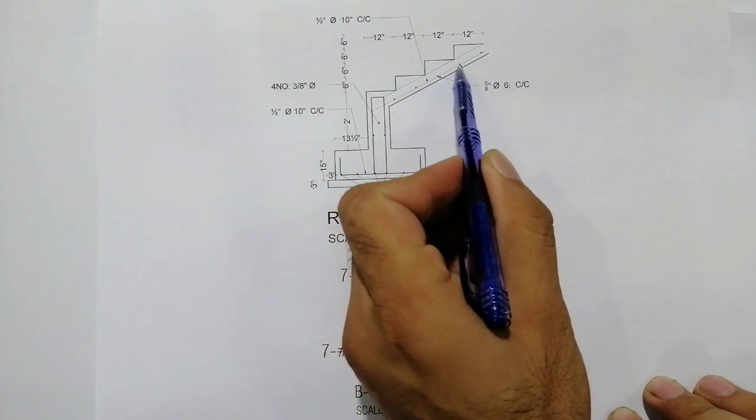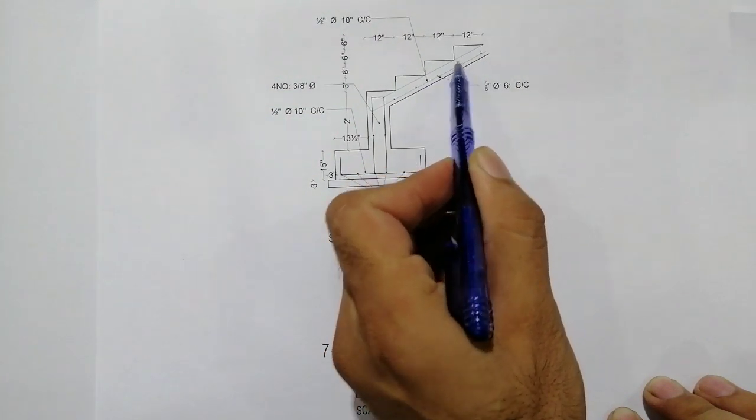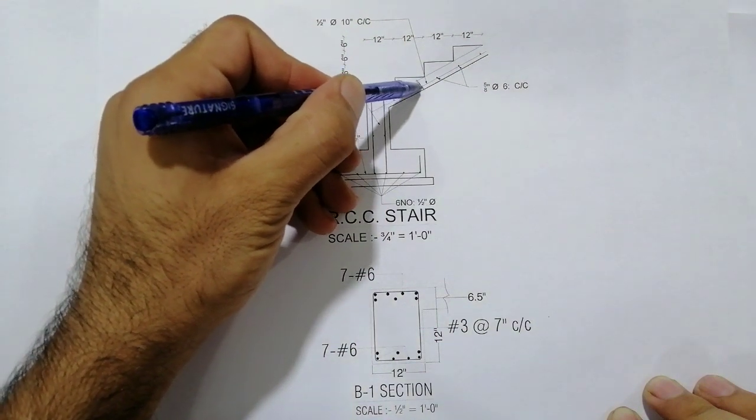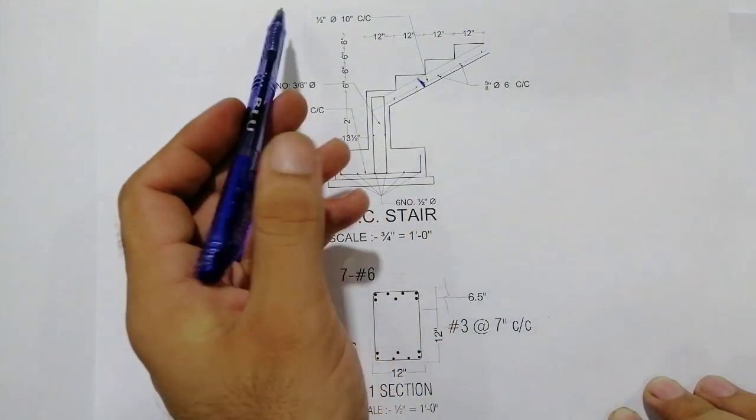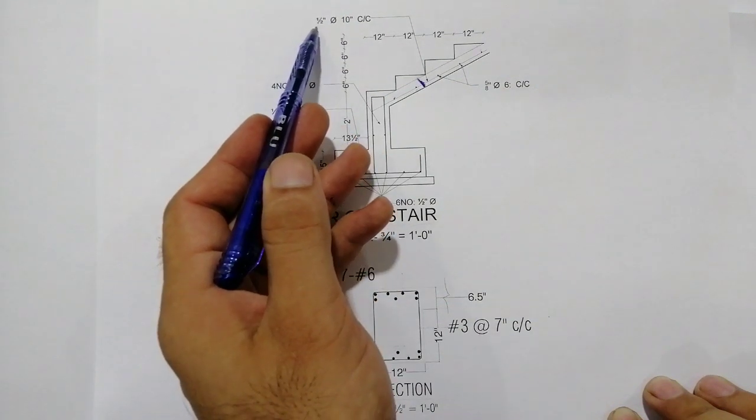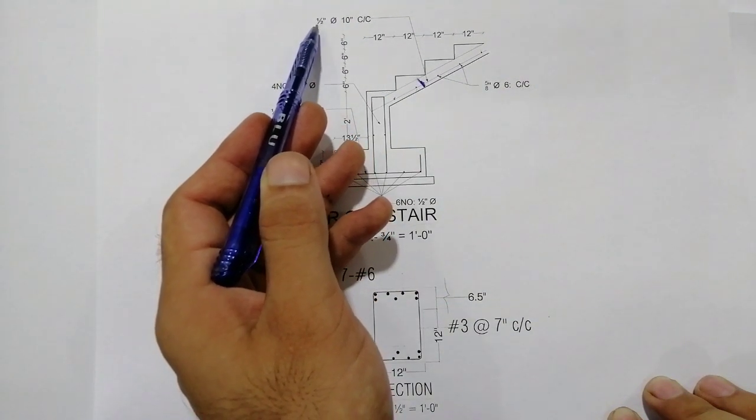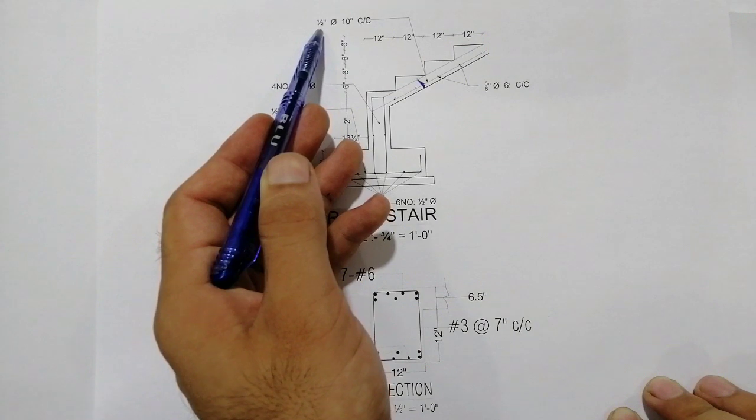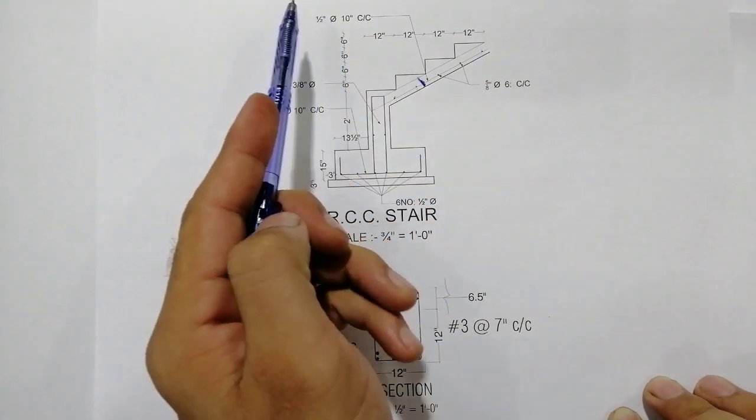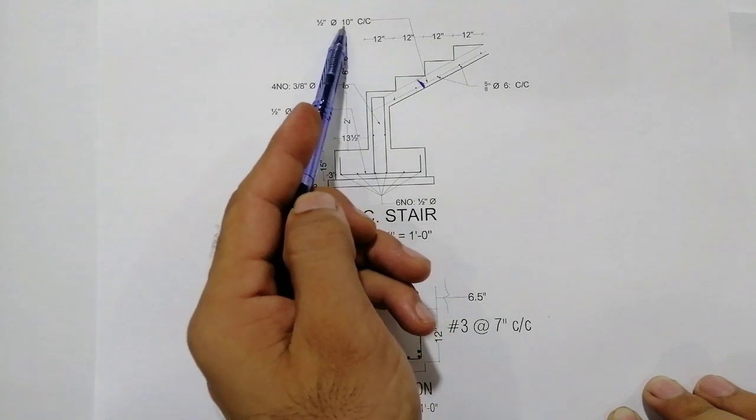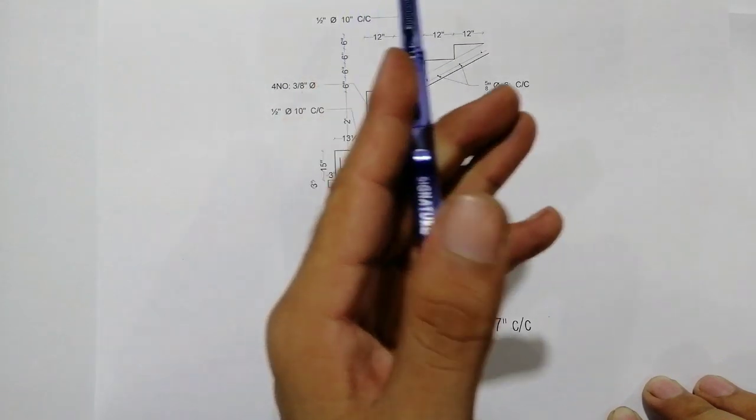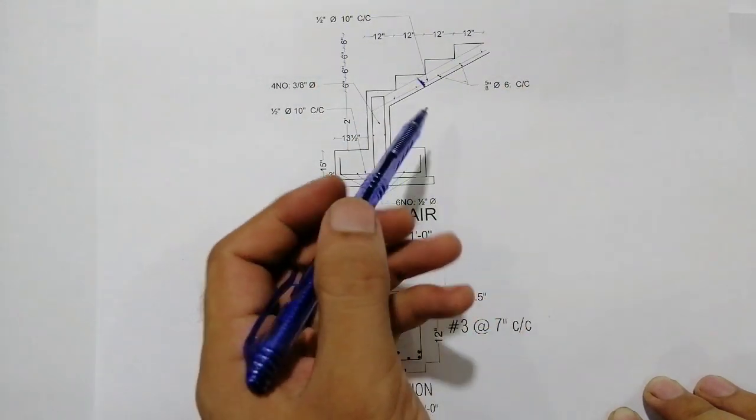Now you can see the west steel bars. These steel bars have a diameter of half inch, 0.5 inches or 1/2, with the spacing of 10 inches center to center.